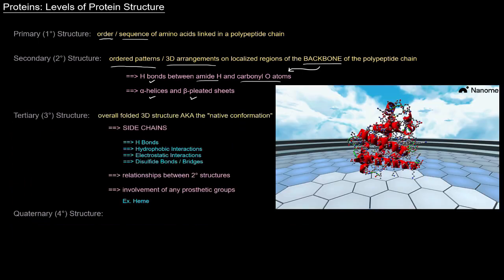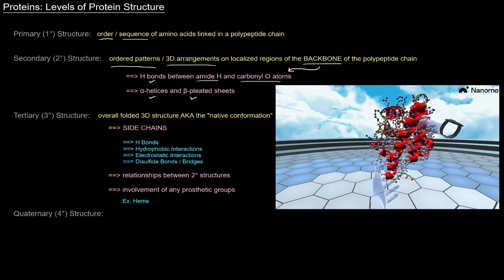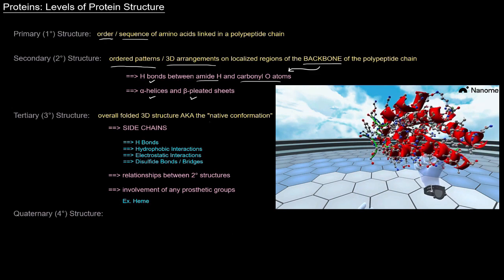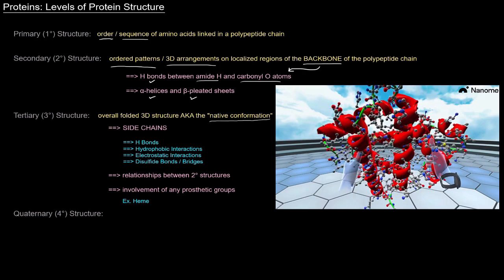So, tertiary structure refers to the overall folded 3D structure. What does it look like overall? That's also called the quote unquote native conformation. And almost always when it comes to tertiary structure, the key thing that I want people to think about is side chains.